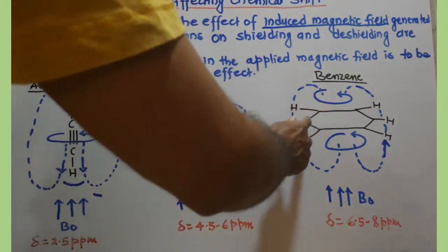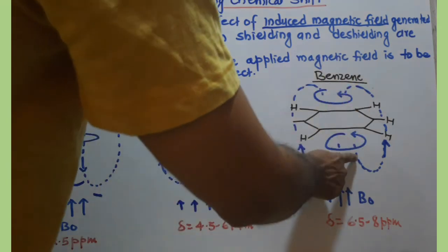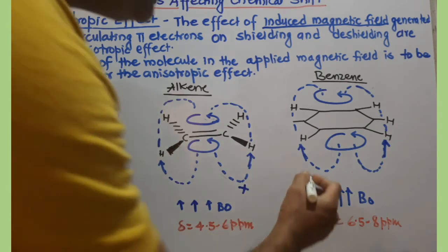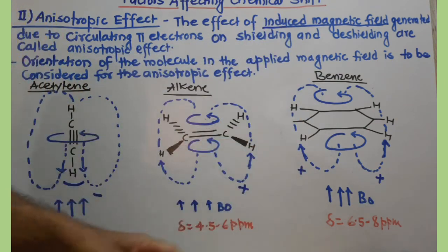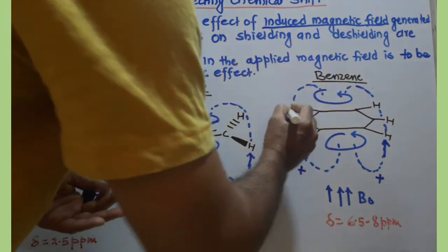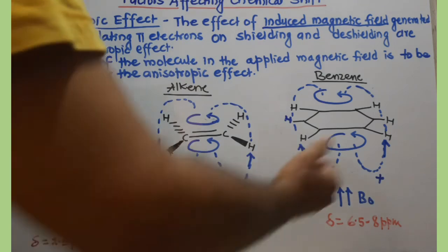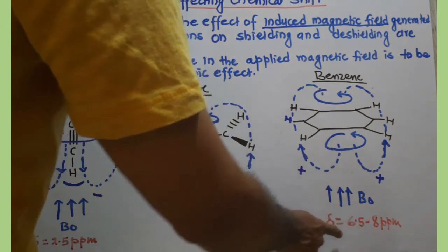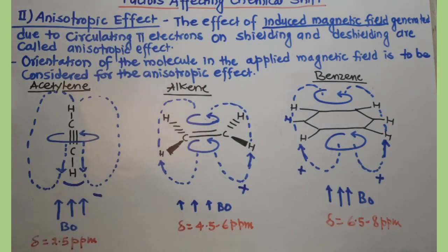Where more pi electrons are present — as in benzene with 6 pi electrons — the induced magnetic field is stronger. The pi electrons circulate and the induced magnetic field at the ring protons is in the same direction as the applied magnetic field, so both fields add together. These protons are deshielded and feel a greater total magnetic field, so we need to decrease the applied magnetic field to bring them into resonance, shifting the signal further downfield. For benzene and its derivatives, the delta value ranges from 6.5 to 8 ppm. This is the anisotropic effect — causing either shielding or deshielding of protons.